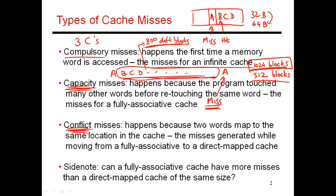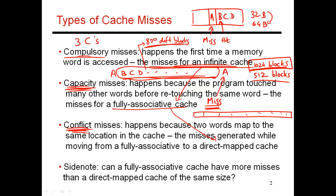A useful guideline to classify misses is to look at misses with an infinite cache — those are compulsory misses. When moving from an infinite cache to a fully associative cache, those additional misses are due to capacity. When moving from a fully associative cache to a direct-mapped or two-way cache, those additional misses are due to conflicts. A fully associative cache does the best possible job handling conflicts by using a single set and retaining the most recently accessed blocks. Moving to a direct-mapped cache exposes all misses caused by two accesses mapping to the same entry.